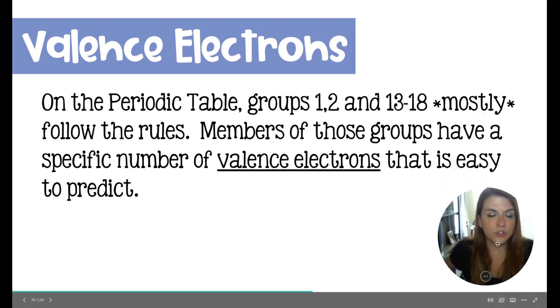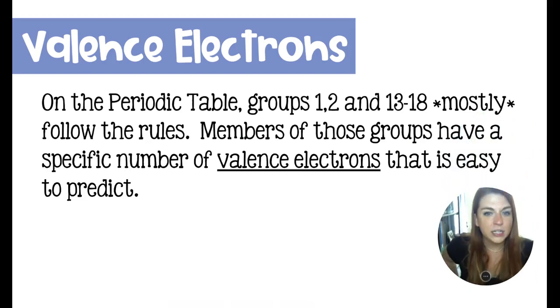So he comes up with Lewis structures, and he bases those Lewis structures on valence electrons only. Valence electrons are the ones that participate in bonding, so they're going to be super important in chemistry.